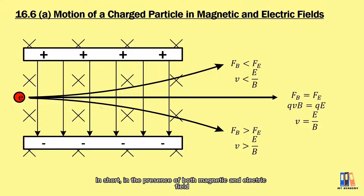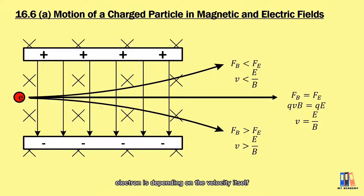In short, in the presence of both magnetic and electric fields, the resultant motion of the electrons depends on the velocity itself.